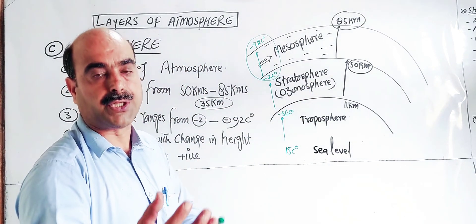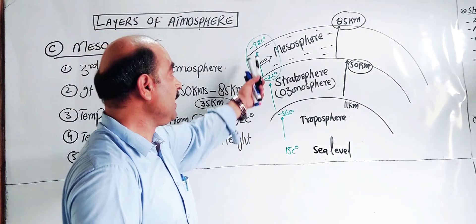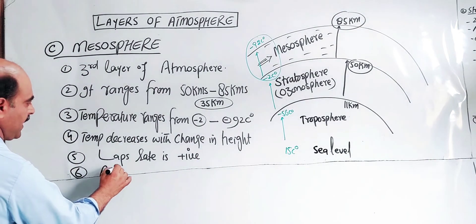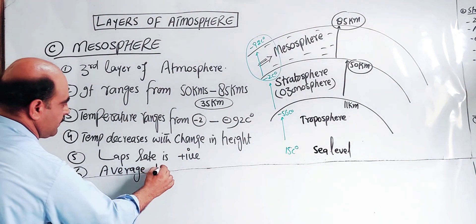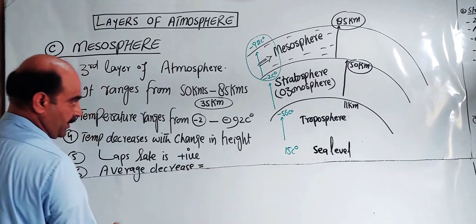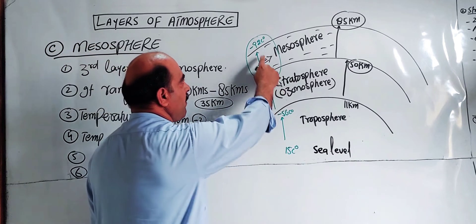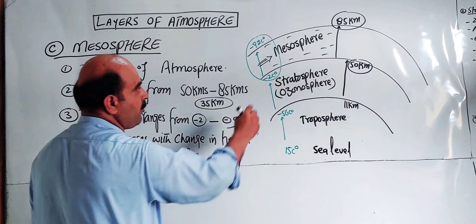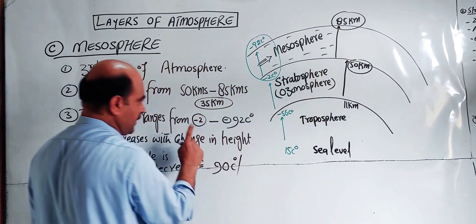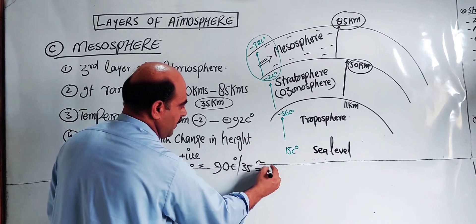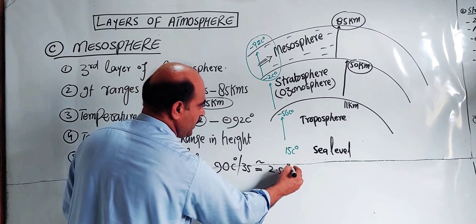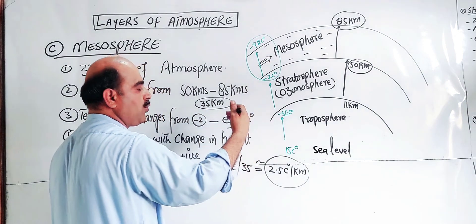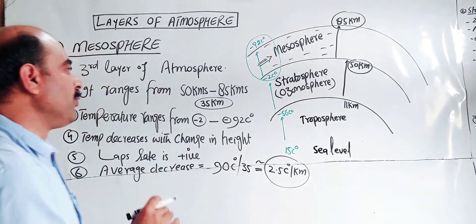There are no significant radiation-absorbing species in this region, which is why temperature decreases throughout the mesosphere. The total temperature decrease is about 90 degrees over the 35 km range. Dividing 90 by 35 gives an average lapse rate of approximately 2.5 degrees Celsius per kilometer.